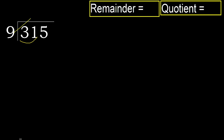9 — multiply by which number is nearest to 31 but not greater. 9 multiply by 4: 36. 36 is greater. Multiply by 3: 27 is not greater.